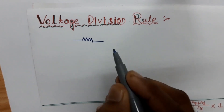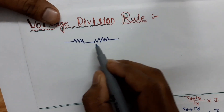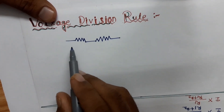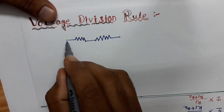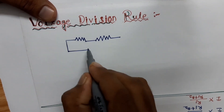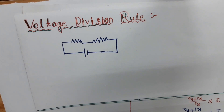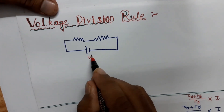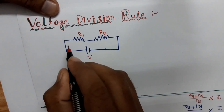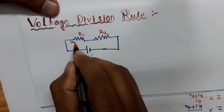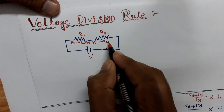Let's take two resistors connected in series. In a series path, voltage is divided — not in the case of parallel. Let this be a voltage source V, this is R1, and this is R2. The voltage is divided: this is V1 and this is V2.